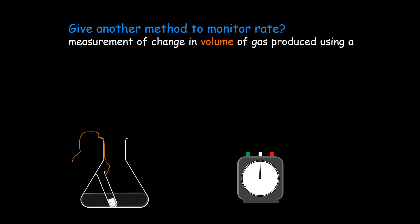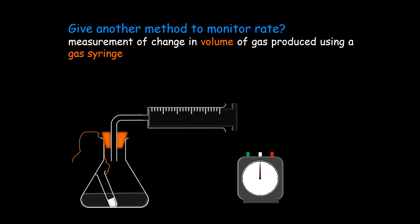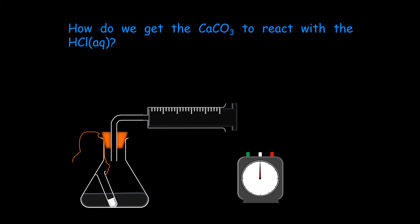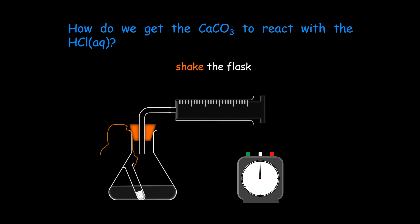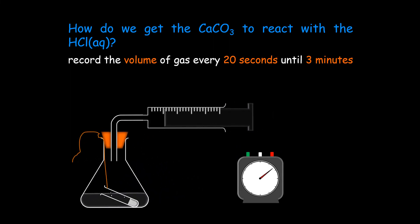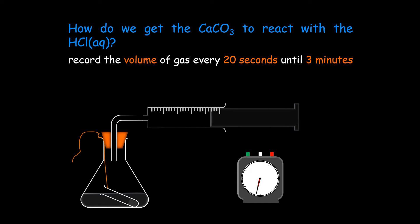Measurement of change in volume of gas produced using a gas syringe. Shake the flask. The little test tube inside falls over, allows the hydrochloric acid in to react with the calcium carbonate. We record the volume of gas every 20 seconds up until 3 minutes.